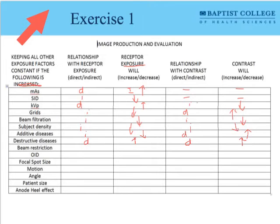Beam restriction is a really good one — it goes back to subject density. As I increase beam restriction, I will be decreasing the area exposed on the image, so it's an indirect relationship with receptor exposure. But it has a direct relationship with contrast: as I increase beam restriction, I increase image contrast because I'm reducing the amount of Compton scattering from the image volume.